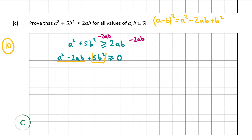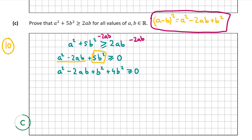If I can extract b² from the 5b², I can rewrite part of the expression as (a − b)², which is always positive since any real number squared is positive. So I write 5b² as b² + 4b², giving a² − 2ab + b² + 4b² ≥ 0. Now a² − 2ab + b² is the same as (a − b)², so I rewrite it as (a − b)² + 4b² ≥ 0. We know (a − b)² is positive, and 4b² is positive since b² is positive and multiplied by 4.